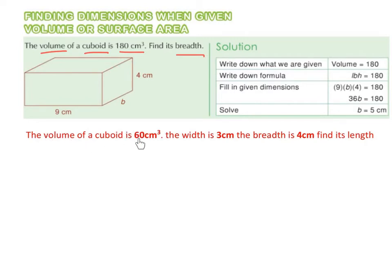The volume of a cuboid is 60 centimeters cubed. The width is 3 centimeters, the breadth is 4 centimeters. Find the length.